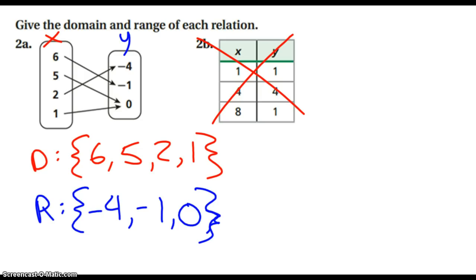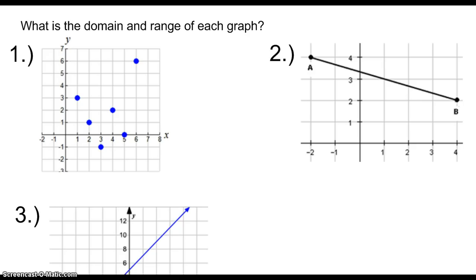The last thing we can do is list relations out as graphs. Now, if you're given a bunch of points, like we are in the first graph here, you're going to look at what these points are — so one, three...